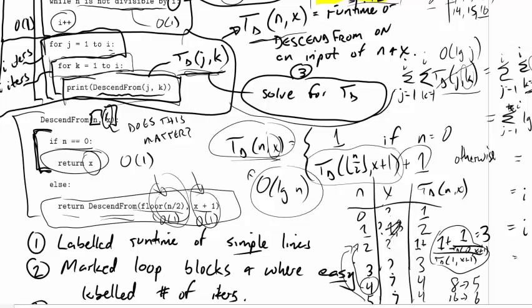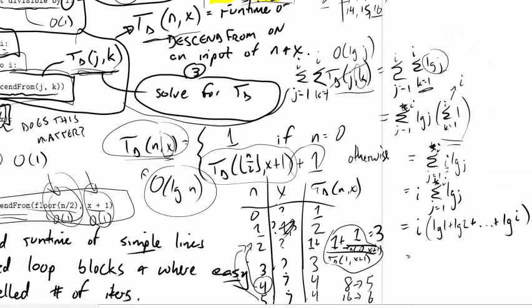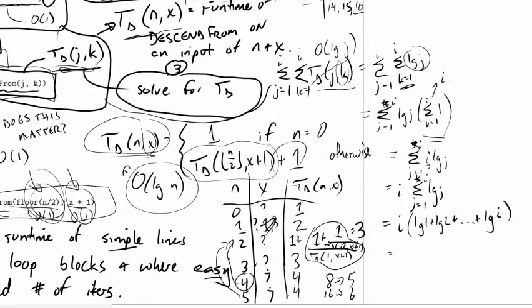j goes from 1 to i, k goes from 1 to i. So my bounds should always have been from 1 to i. And that all looks good.